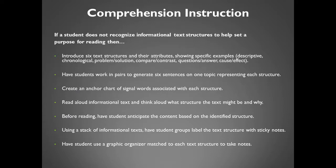If a student does not recognize informational text structures to help set a purpose for reading, then introduce six text structures and their attributes showing specific examples: descriptive, chronological, problem-solution, compare and contrast, question and answer, cause and effect. Have students work in pairs to generate six sentences on one topic representing each structure. Create an anchor chart of signal words associated with each structure. Read aloud informational text and think aloud about what structure the text might be and why. Before reading, have the student anticipate the content based on the identified structure. Using a stack of informational texts, have student groups label the text structure with sticky notes. Have the student use a graphic organizer matched to each text structure to take notes.